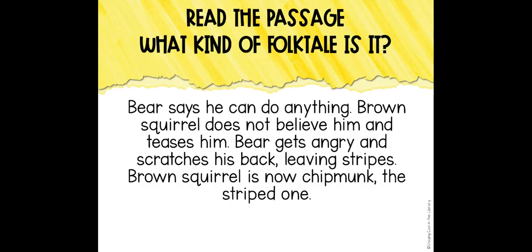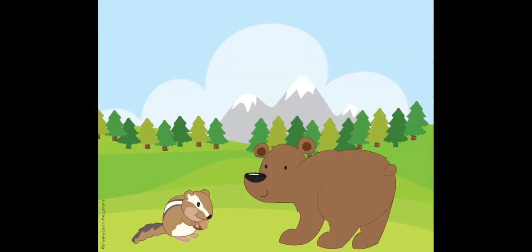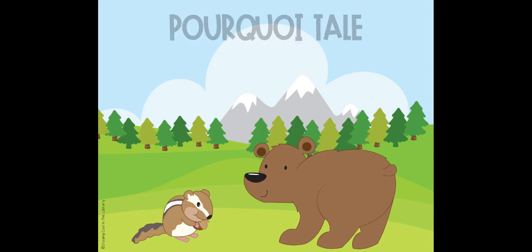This one says: Bear claims he can do anything. Brown squirrel does not believe him and teases him. Bear gets angry and scratches his back, leaving stripes. Brown squirrel is now chipmunk — the striped one. If you said a pourquoi tale, you are correct.